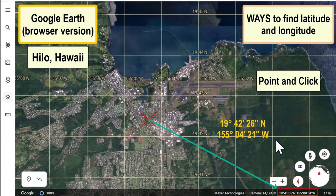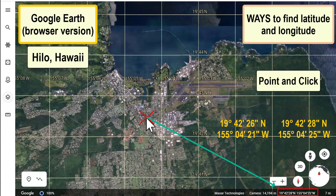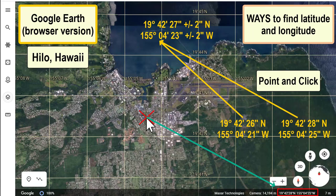Another option is to use the bottom-right latitude and longitude readout — simply point your cursor and read off the coordinates. Move the cursor around a little to either represent the width of the city you are estimating, or to see what kind of error you have. Even for a single point there might be a jump — in this case about two seconds in latitude and four seconds in longitude. Take the middle point and add that error to your final answer.